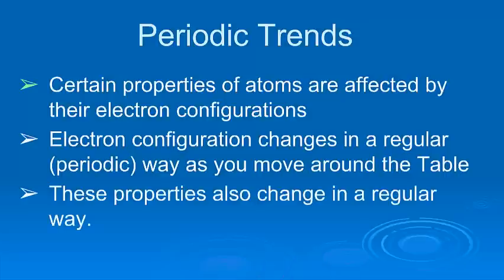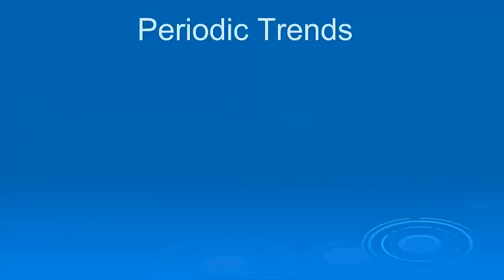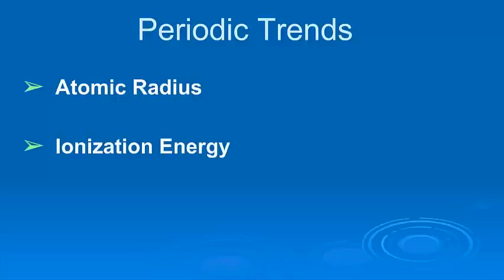Well, because of that, these properties that are affected by the electron configurations are also going to change in similar ways. So, we're going to look at three big ones. One is called atomic radius. The second is called ionization energy. And the third is called electronegativity. And that's probably going to be the most important one that we're going to need to think about when we think about how atoms bond or why they bond the way they do.